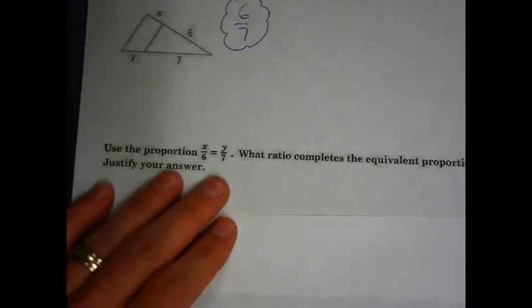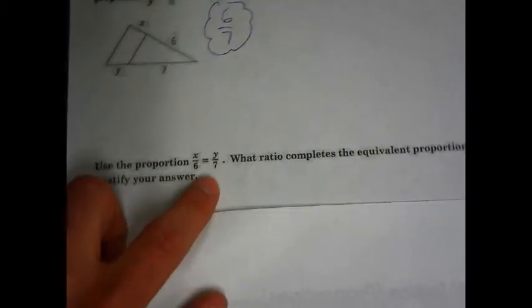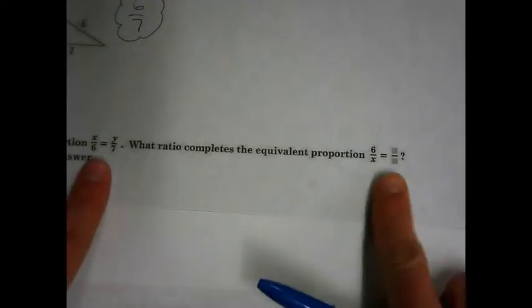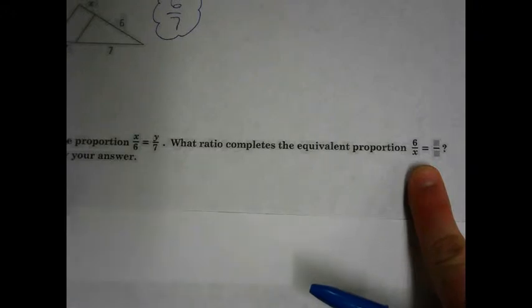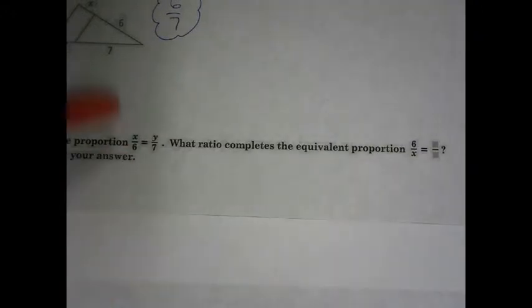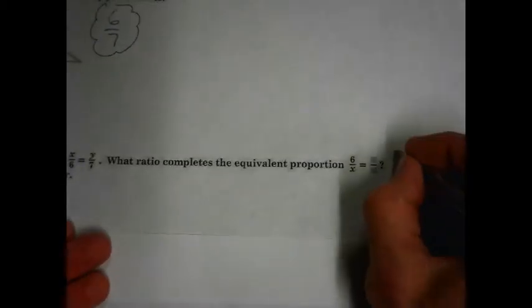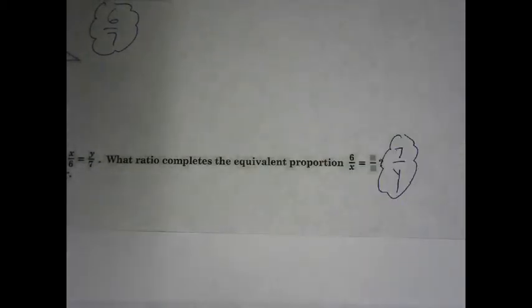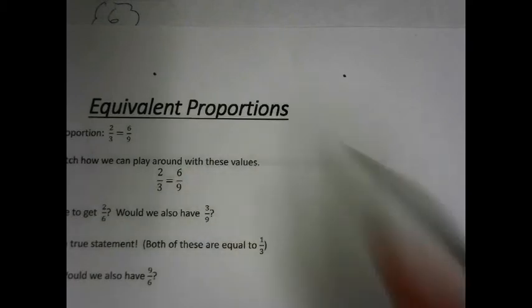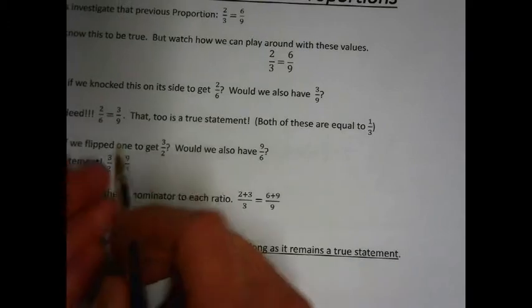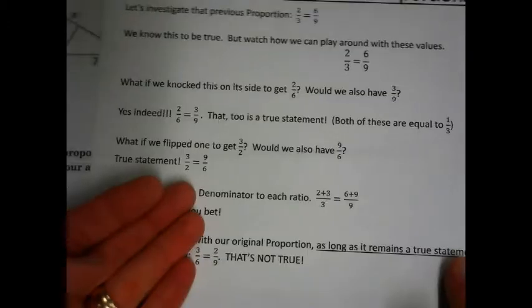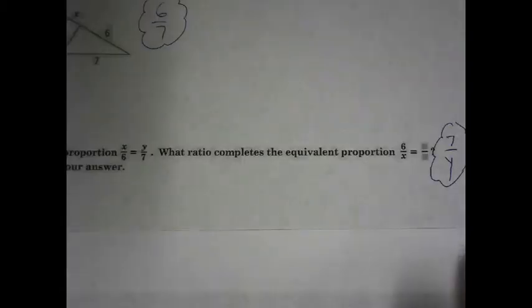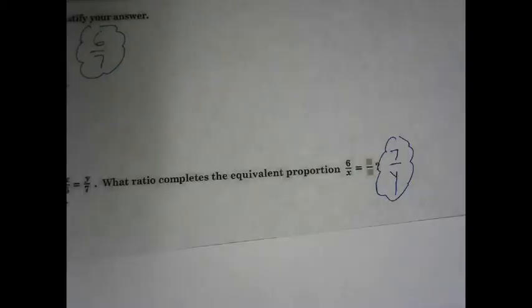In the second example, using the original proportion x to 6 equals y to 7, what ratio completes the equivalent proportion 6 to x equals blank to blank? What just happened from the original proportion to the new one? We flipped it over. So if we're flipping x to 6, then we would have 7 to y as the equivalent proportion. Justification: 2 thirds equals 6 ninths, and if I flip them, I'd have 3 halves equal to 9 sixths — that's a true statement.